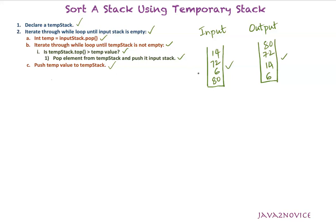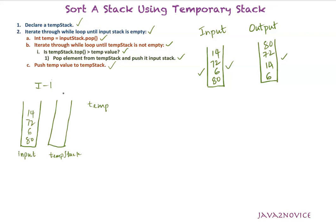Now we will take this input stack, apply these steps, and see how we can sort elements using a temporary stack. Iteration 1: as a first step we declare a temporary stack. We are inside the while loop and since the input stack is not empty, we iterate. We pop out the first element from the input stack and assign it to the temporary variable. The temporary variable is now holding value 14.